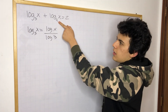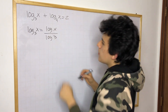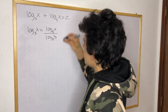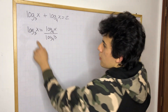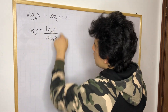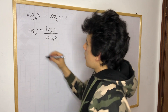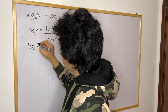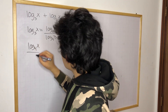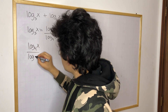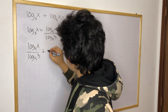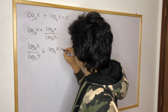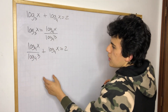And now since we have a base of 4 for the other logarithm, that's the number I am going to choose for the base of these two logarithms. Now we can replace this value into the original equation. So we're going to have log base 4 of x over log base 4 of 3, plus log base 4 of x, is equal to 2. This is the equation that we have.